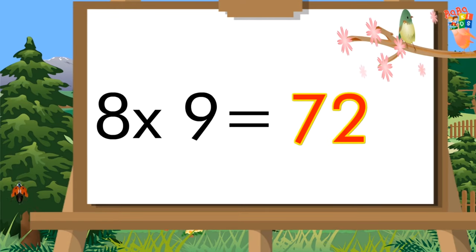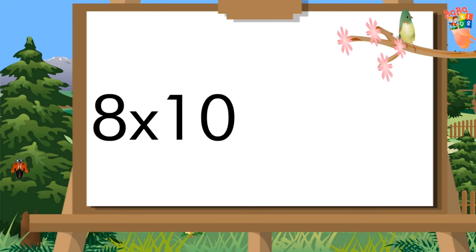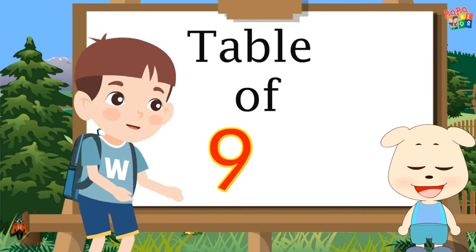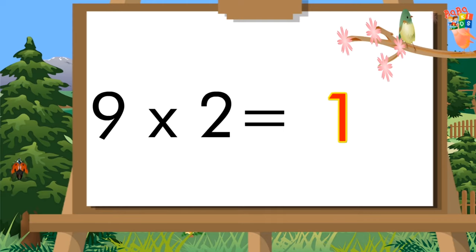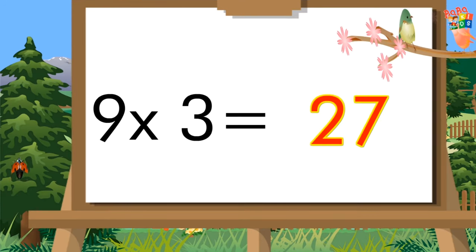72, 8x10 is 80. Table of Nine: 9x1 is 9, 9x2 is 18, 9x3 is 27